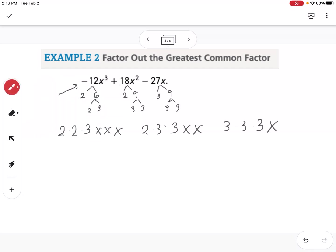So now I look for common things. They don't all have a 2. They do all have a 3. And it looks like they all have an x, and that's it.